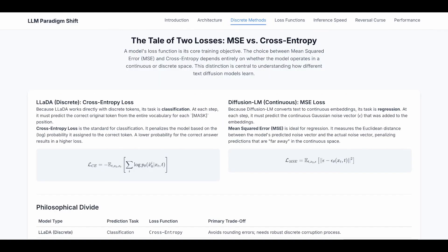Now let's talk about the different loss functions for DLM. The model's loss function, its core training objective, the choice between MSE that is from the original image diffusion and cross entropy that is from the discrete text diffusion, depends entirely on whether the model operates in a continuous or discrete space. The distinction is central to understanding how different text diffusion models learn.